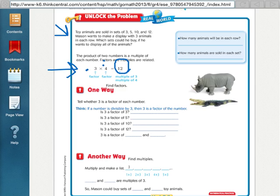So, Mason wants to make a display with 3 animals in each row. So, which one of those sets could he buy if he wants to display all of the animals? He has to choose out of these sets which ones could make rows of 3.